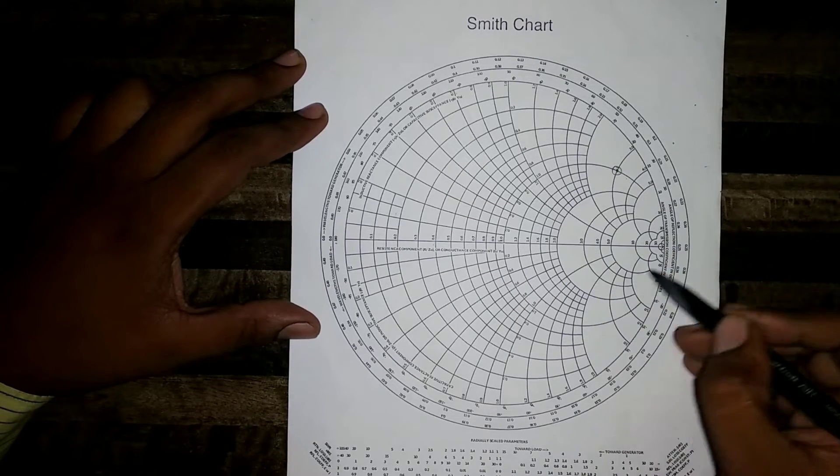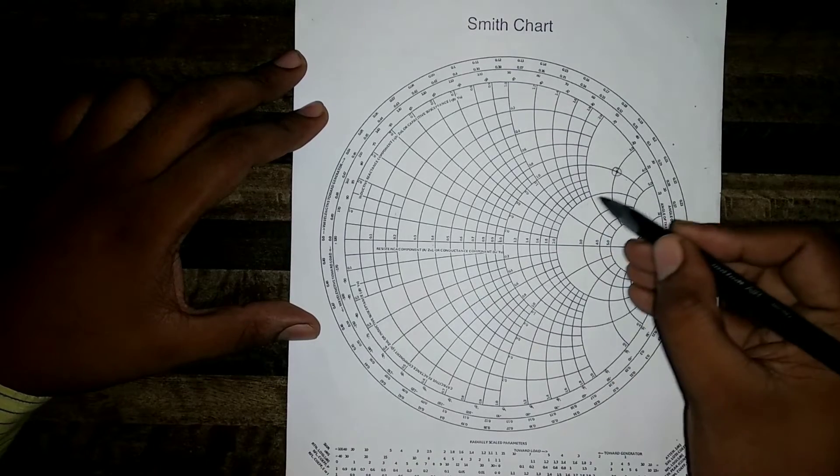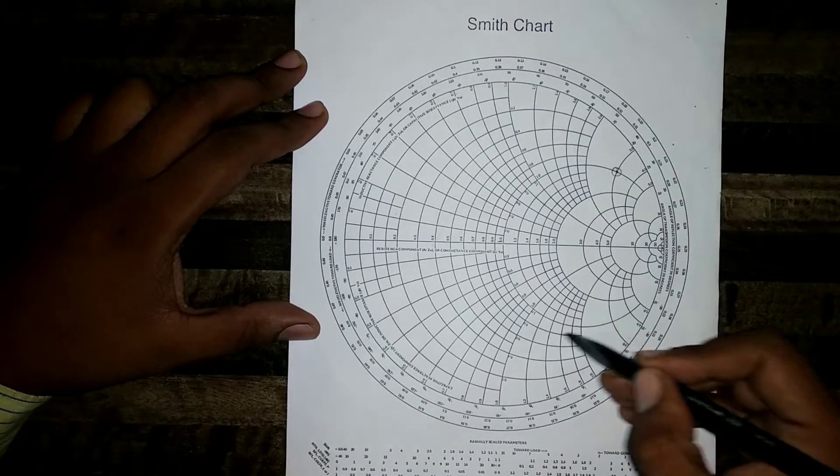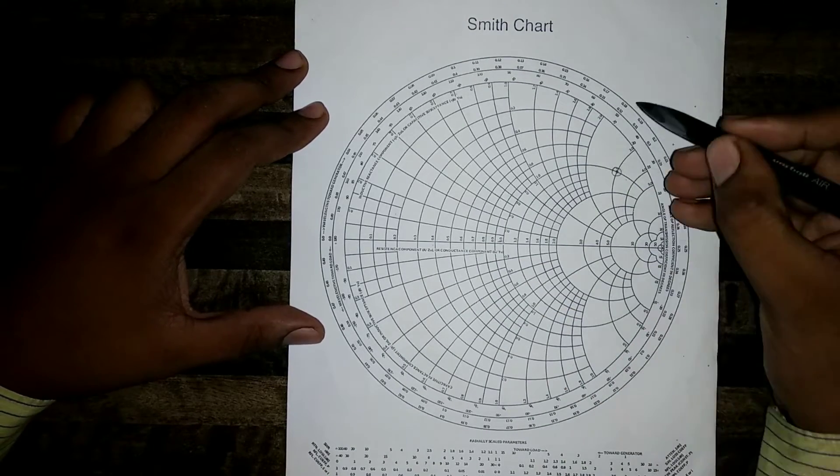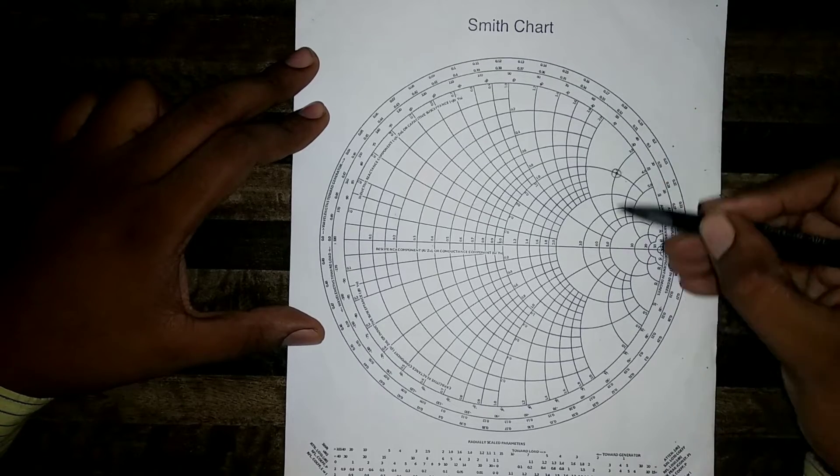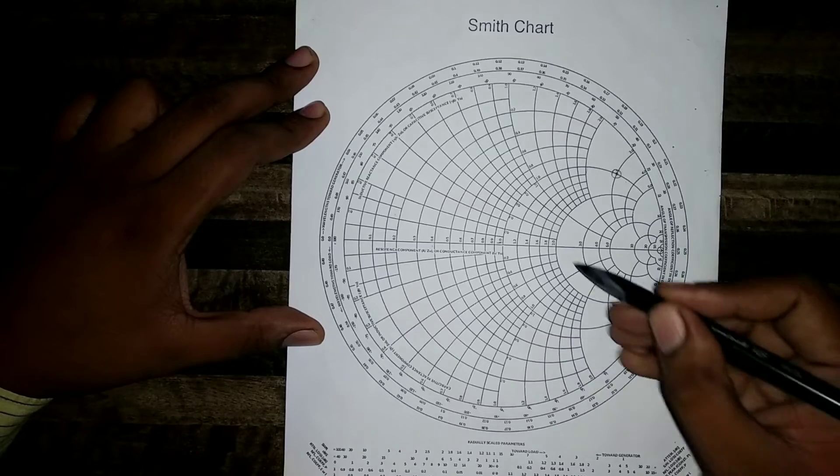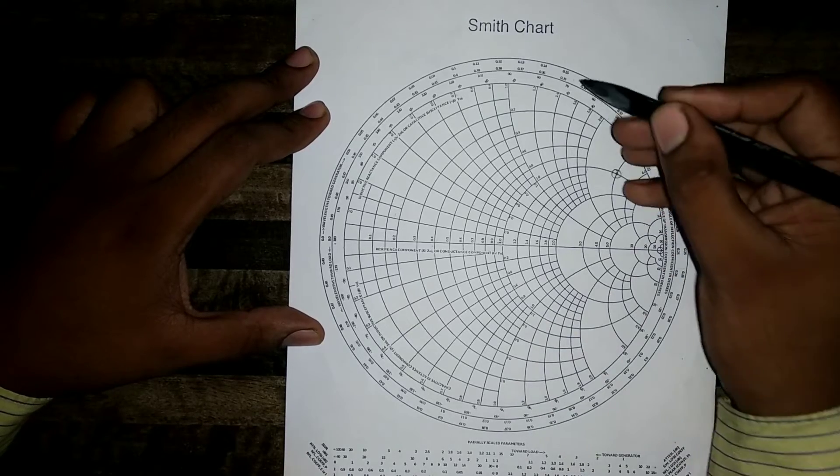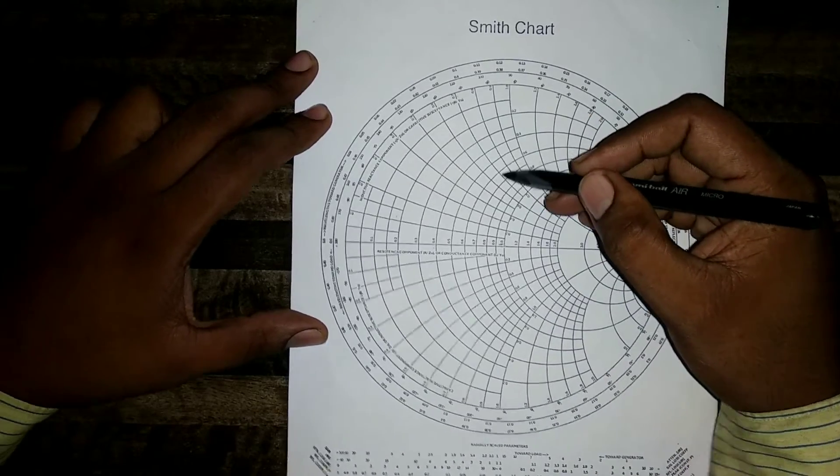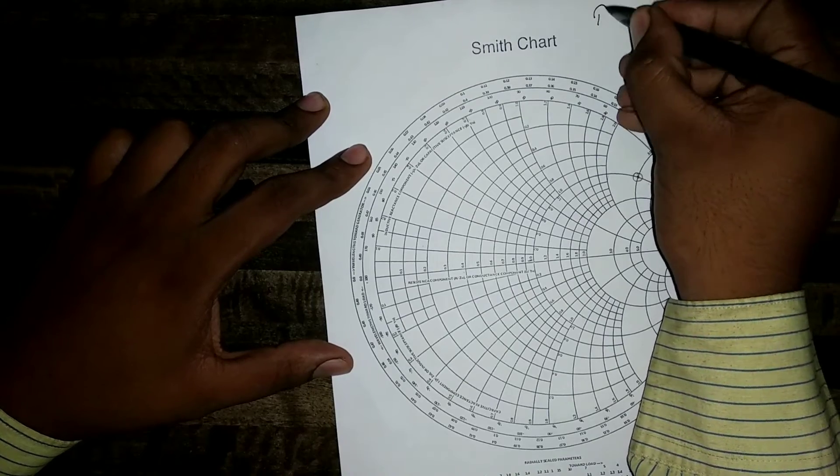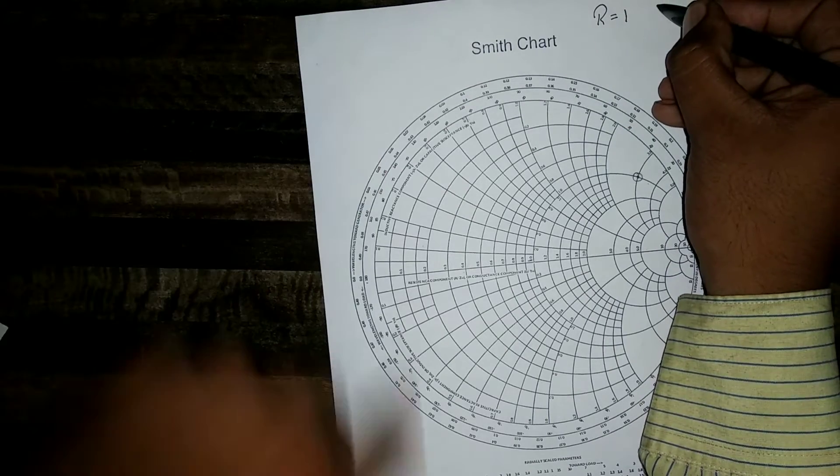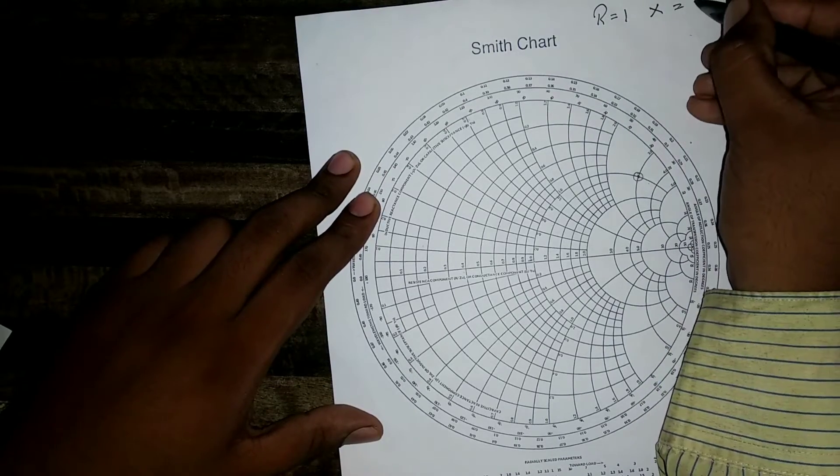Now you can see the circles over here and these circles are called R circles. You can also see the arcs. This arc circles are there in the upper part as well as in the lower part. This arc circles are called X circles. Now I have to locate R equal to 1 and X equals to 3.